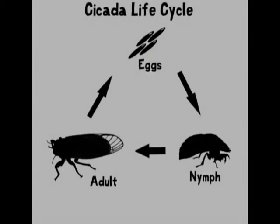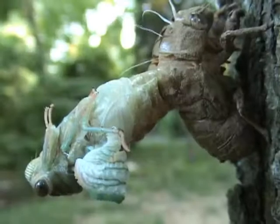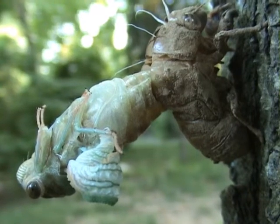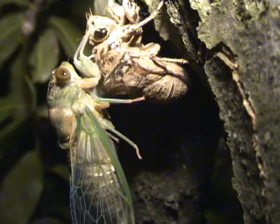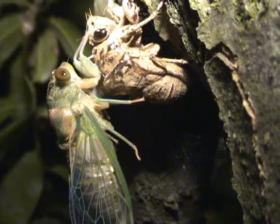The cicada life cycle is a wonder in itself. Some species have a life cycle that lasts 17 years, most of which is spent underground in the nymph stage. The nymphs feed on fluids in the tree roots and will only come above ground when they're ready to shed their skin and mate. The process you see here is the adult form coming out of the skin of the nymph. Once it climbs out and has a chance to dry off, the wings will harden and it will fly away.